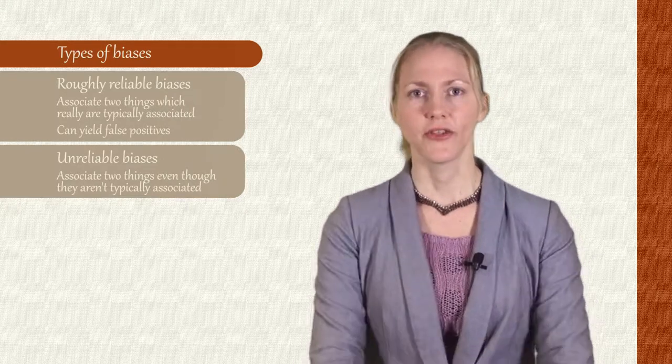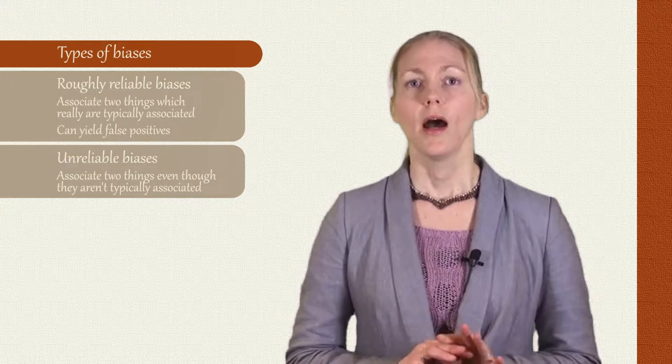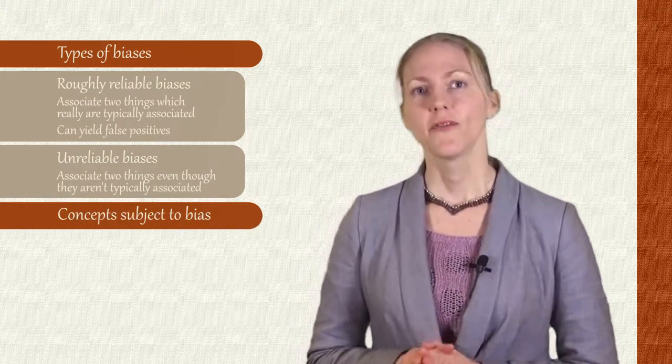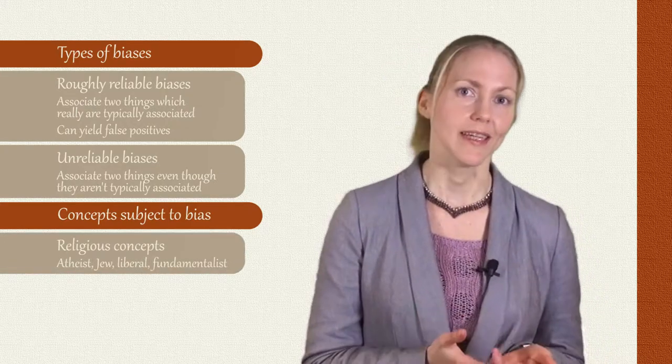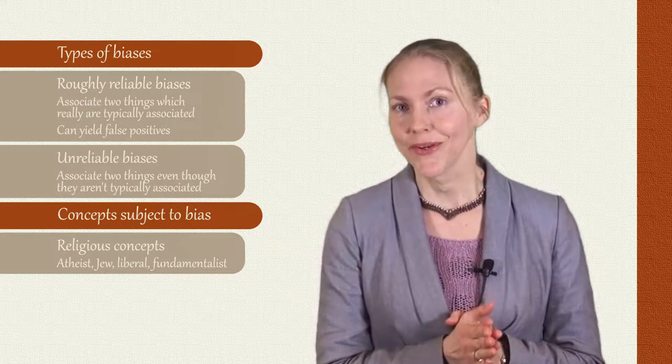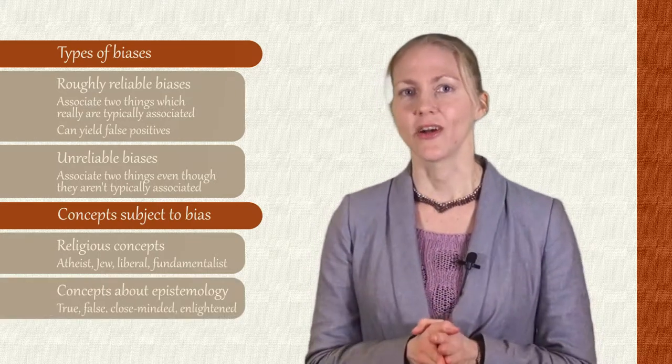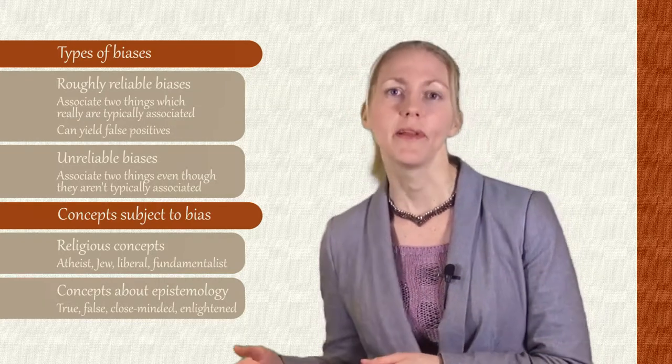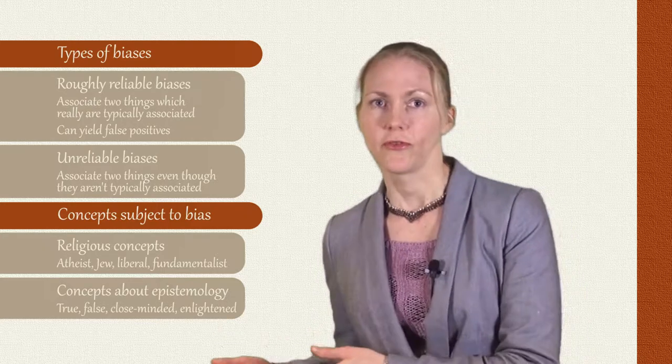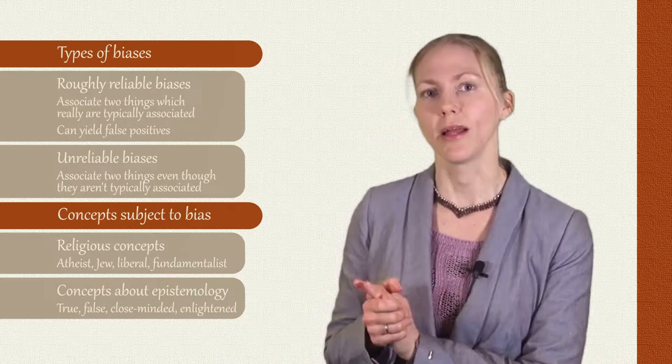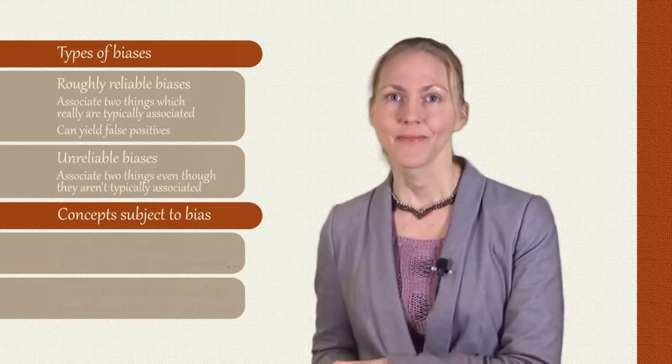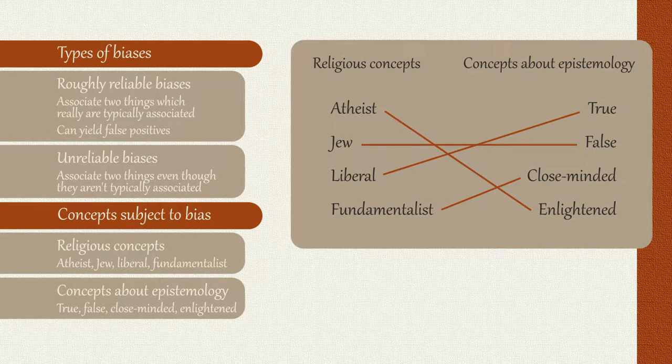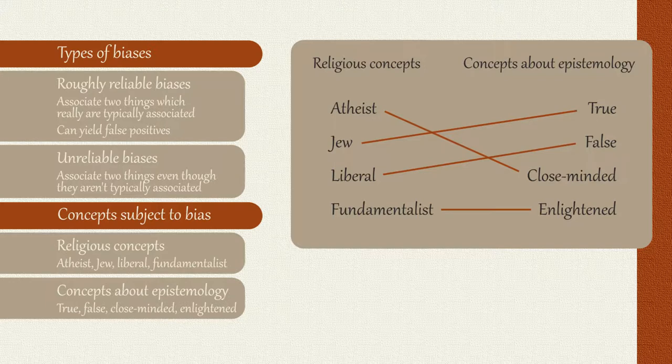Now let's apply these considerations to religious disagreements. I want to focus on two kinds of concepts that we can have biases about. First there are religious concepts, for example atheist, Muslim, Jew, Catholic, liberal, fundamentalist. Second, there are concepts about epistemology, that is about truth, falsehood, or intellectual abilities. For example, we have the concepts of true, false, closed-minded, spiritually blind, enlightened, revealed by God. So it's very easy, indeed it's natural, for people to have biases which associate religious concepts on the one hand with epistemological concepts on the other.